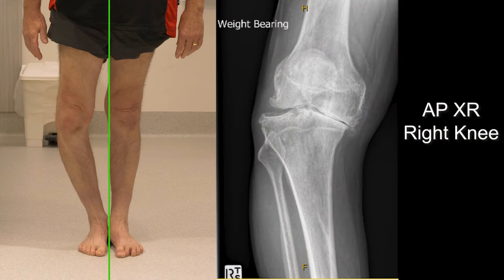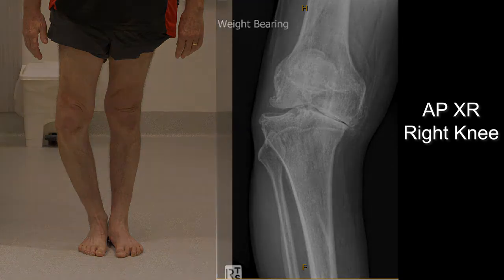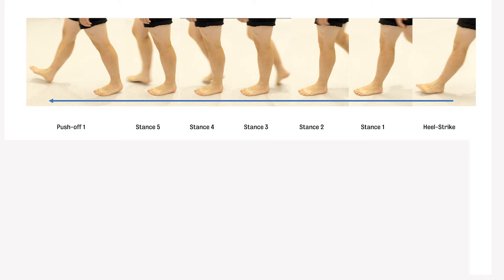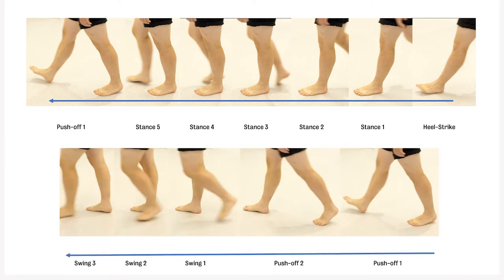Here is the patient's anteroposterior radiograph of the right knee — notice the cardinal signs of osteoarthritis. Now to gait assessment. The gait assessment includes rate and rhythm, as well as each phase of the gait cycle: heel strike, stance, push off, and swing phases, referenced to the left lower limb. This completes the gait cycle.